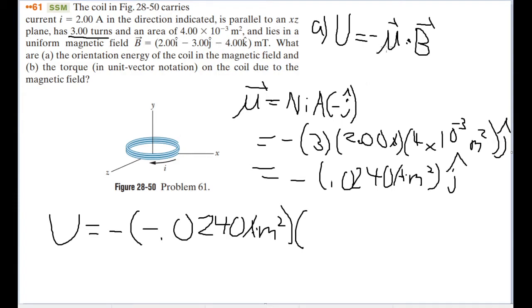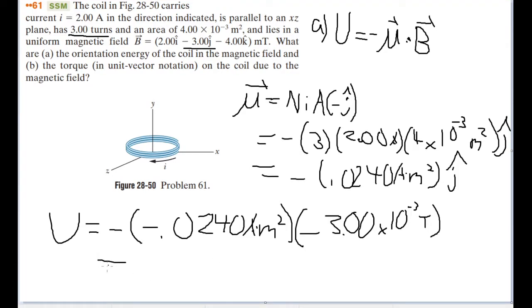Which one of these components do we use? Remember, a dot product is a multiplication of the parallel components. It's a multiplication of the components of the two vectors that are parallel to one another. Because our magnetic dipole moment is in the j direction, let's use the j component of the magnetic field as well. So that's going to be a negative 3.0 milliteslas. This gives us an energy of negative 7.20 times 10 to the negative fifths in joules. That is our answer for part A.